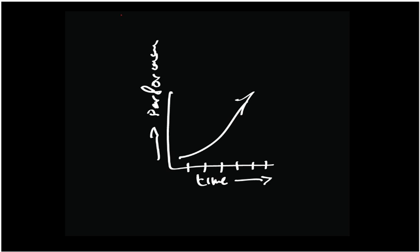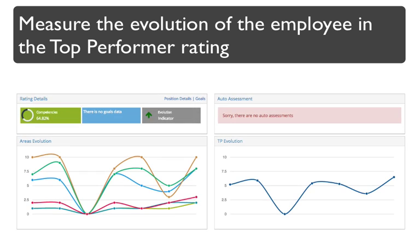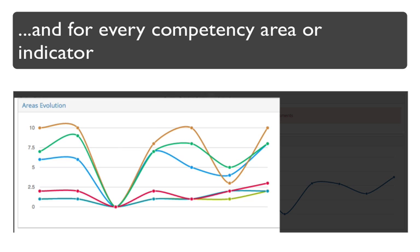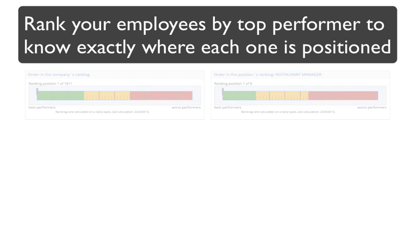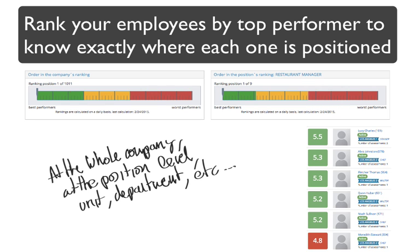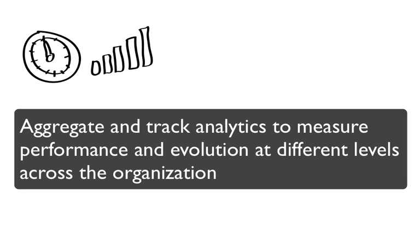The issue is not only about how the employee is being rated. Measure the evolution of the employee in the top performer rating and for every competency area or indicator. Rank your employees by top performer to know exactly where each one is positioned — at the whole company level, at the position level, unit, department, etc. Aggregate and track analytics to measure performance and evolution at different levels across the organization.